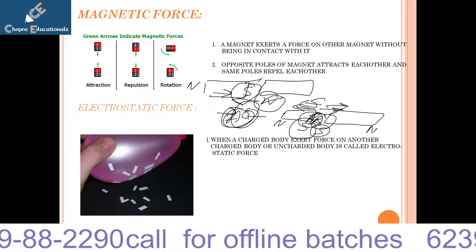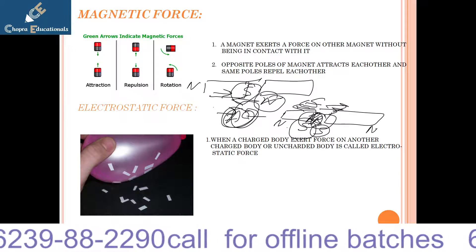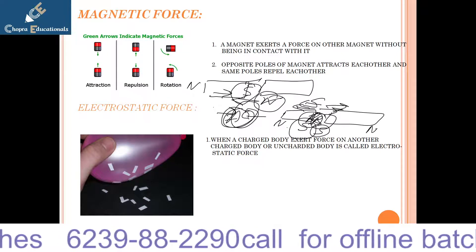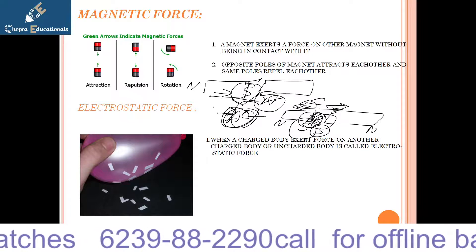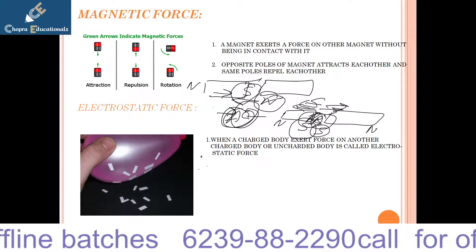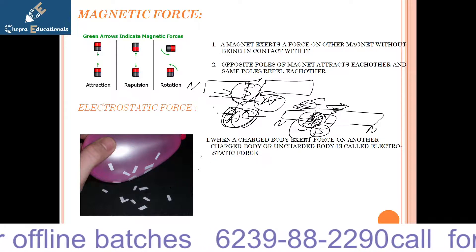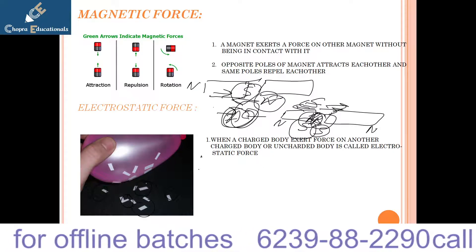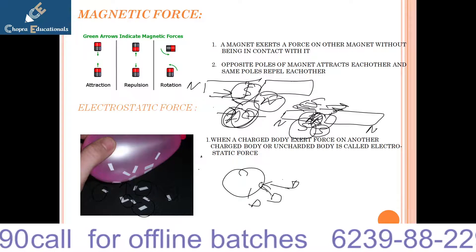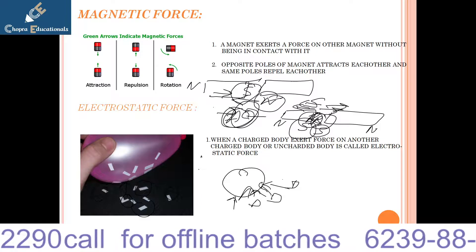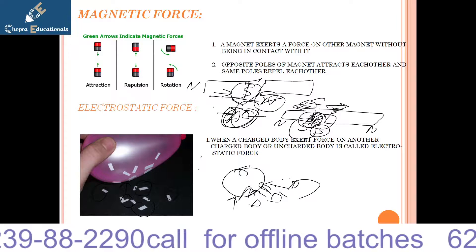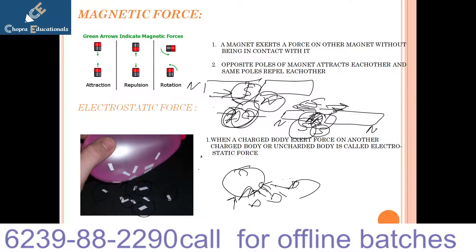Next is electrostatic force. When a charged body exerts force on another charged or uncharged body, it is called electrostatic force. For example, we have small pieces of paper and bring a charged balloon near them — the balloon attracts the paper pieces even though the paper is uncharged. That is the electrostatic force.